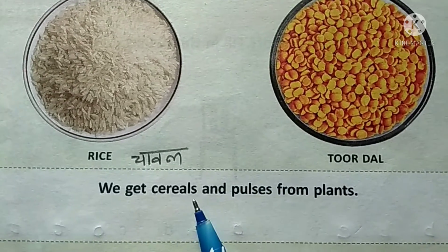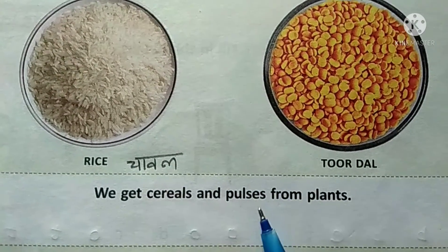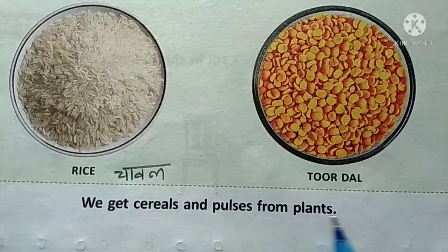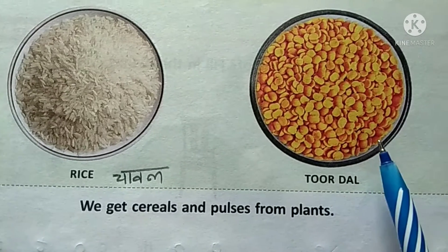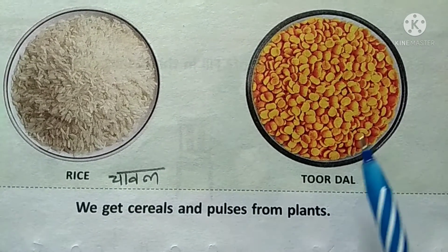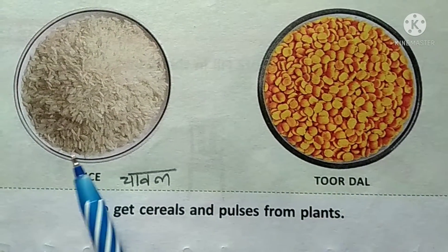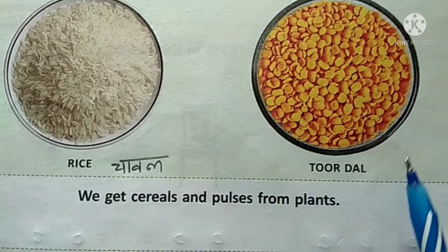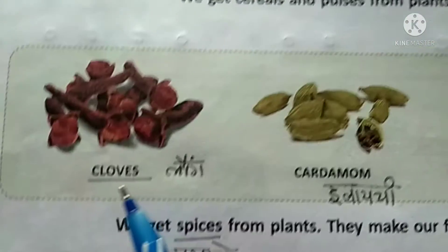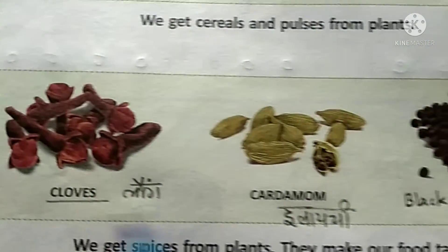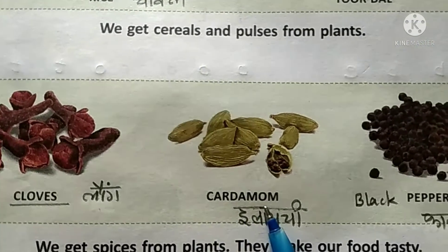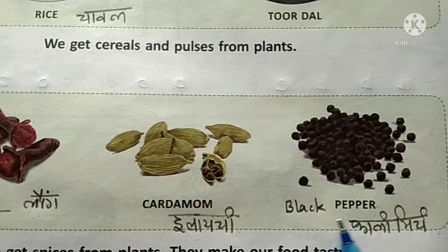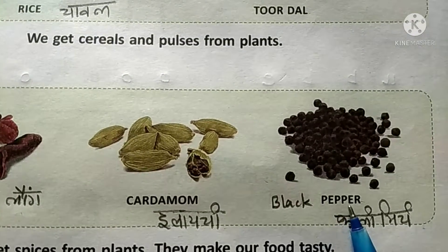We get cereals and pulses from plants. हम plants से क्या क्या प्राप्त करते हैं? Rice, toor dal, and also cloves, cardamom, black pepper.